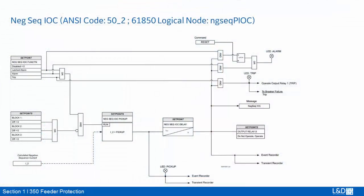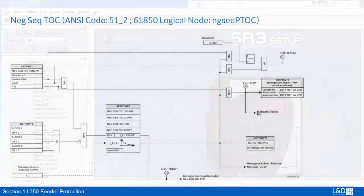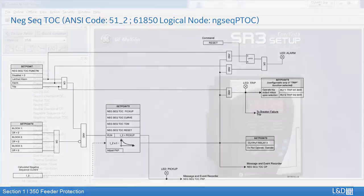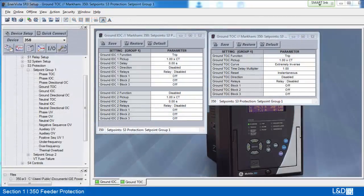From the logic diagram of negative sequence IOC and TOC, we can see the input current I2 is the calculated negative sequence current. For the calculation of the inverse curve, the multiple should be negative sequence current over the CT rating. Ground IOC and TOC use the ground input D6/E6 measured current as the operating current.